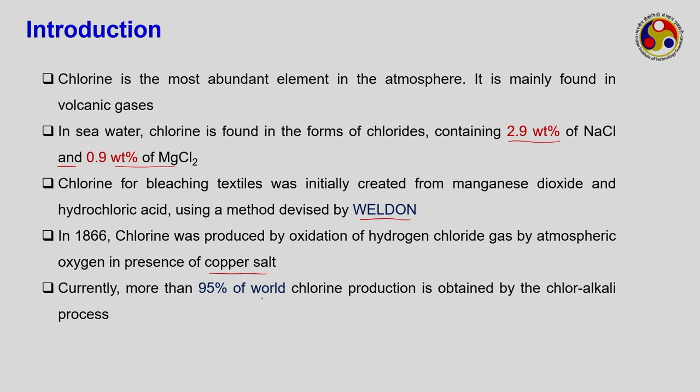These methods have since been improved and modern techniques adopted. Now more than 95% of world chlorine production is obtained by the chloralkali process, which we will discuss next.